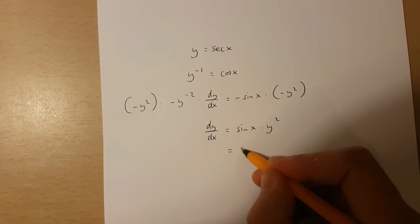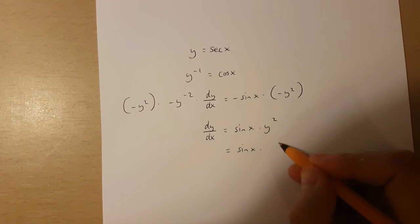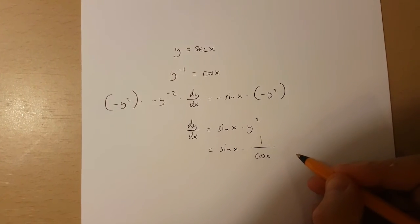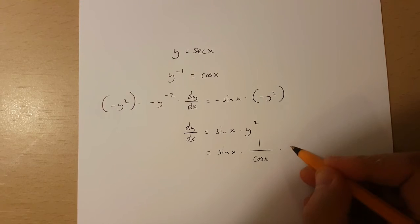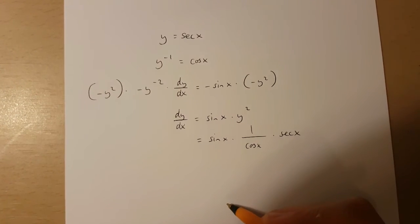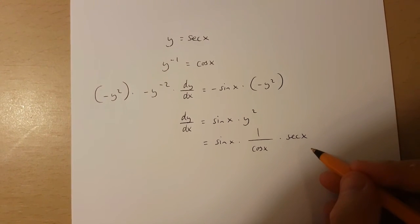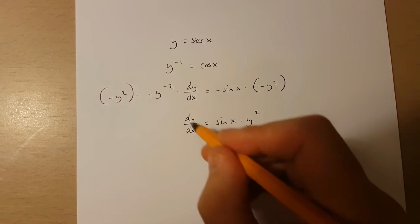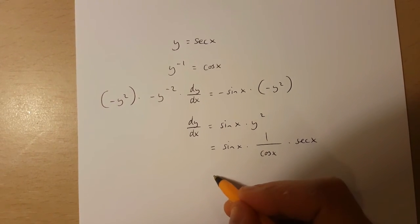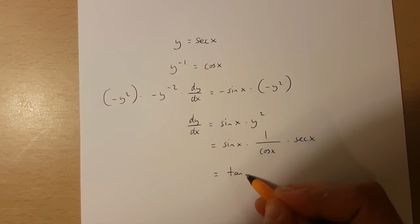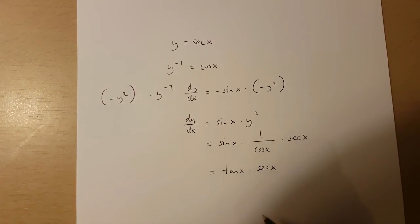And this is the same as sin x times 1 over cos x, which is sec x times sec x. Now because I've got this, I can simplify dy over dx into tan x times sec x.